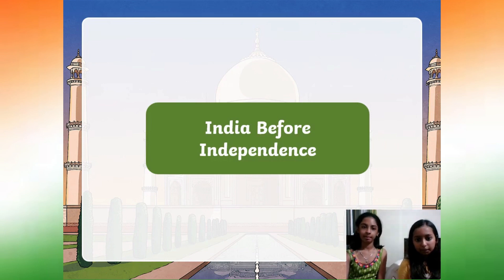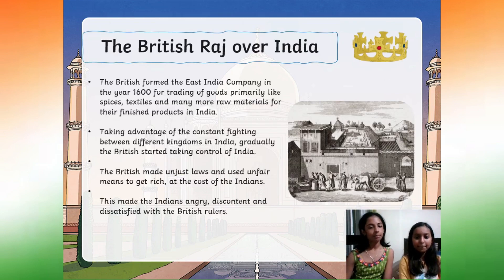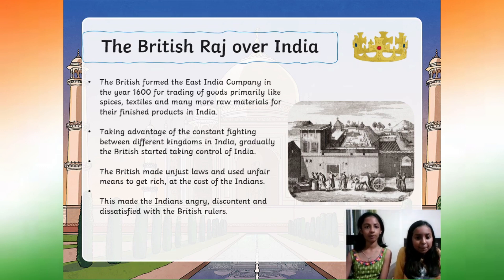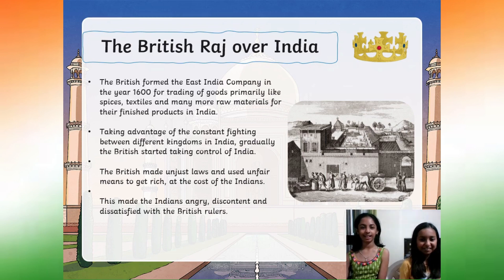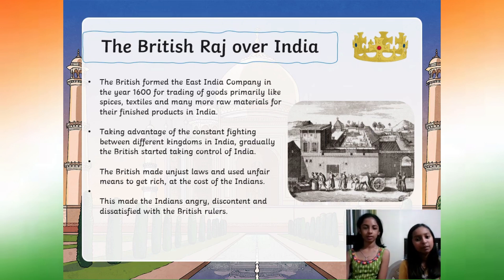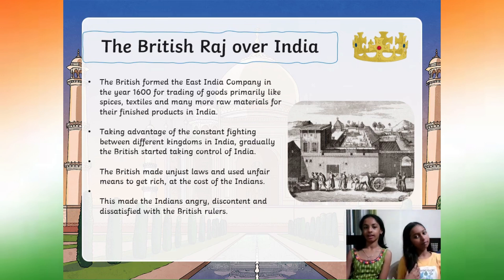India before independence: The British Raj over India. The British formed the East India Company in the year 1600 for trading of goods, primarily spices, textiles, and many more raw materials for their finished products in India. Taking advantage of constant fighting between different kingdoms in India, the British gradually started taking control. They made unjust laws and used unfair means to get rich at the cost of the Indians, making Indians angry, discontent, and dissatisfied with the British rulers.